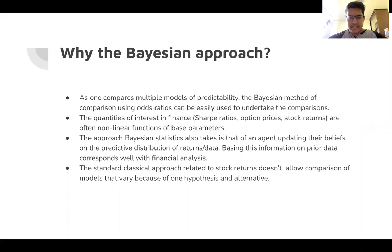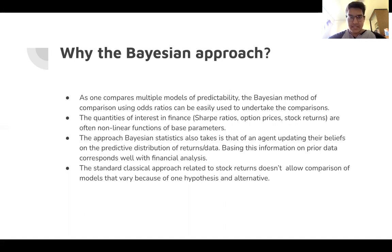So why use the Bayesian approach in the first place? As one compares multiple models of predictability, Bayesian methods using odds ratios can be easily used to undertake comparisons. In the frequentist way, with a lot of these complex models — multi-level models, different types of regressions — it's much harder to compare them.